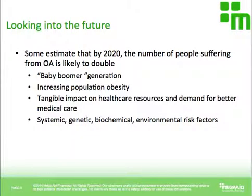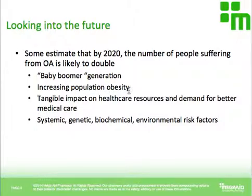Looking into the future, some actually estimate that by 2020, the number of people suffering from osteoarthritis is likely to double. That makes sense because we have a baby boomer generation that's going to retire, so we'll have a lot more older people who can develop osteoarthritis. We also have an increasing population obesity, and as mentioned, obesity is a huge risk factor for osteoarthritis. All of those factors are going to have a tangible impact on healthcare resources, and perhaps we'll need to make changes in healthcare to provide medical care to all of these people.